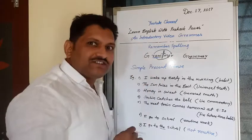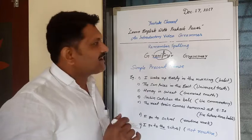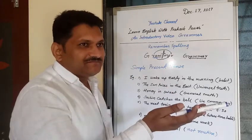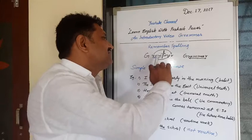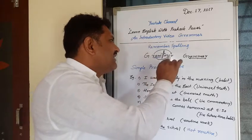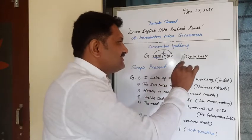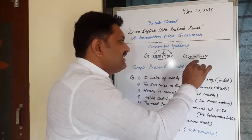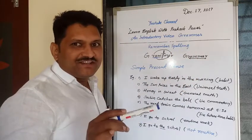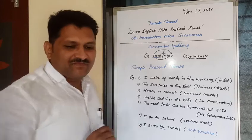First write G, then write the name of the Hindu God — that is RAM. Now look at RAM in a mirror. When you look at RAM in a mirror, R comes first, then A, then M. So the correct spelling of grammar is G-R-A-M-M-A-R. This trick will definitely be useful for remembering the spelling of grammar.